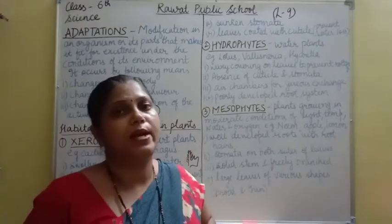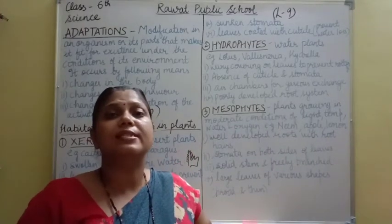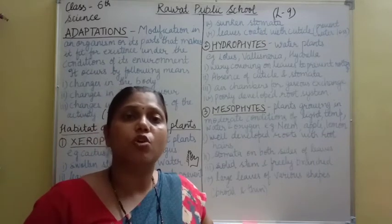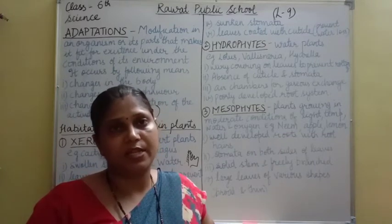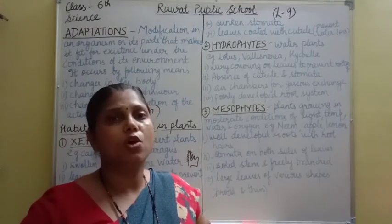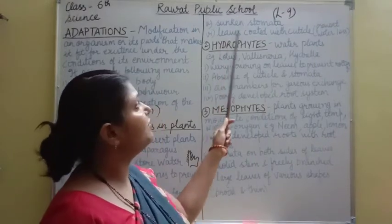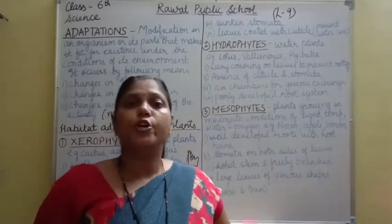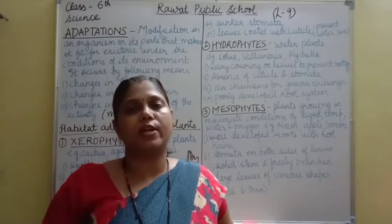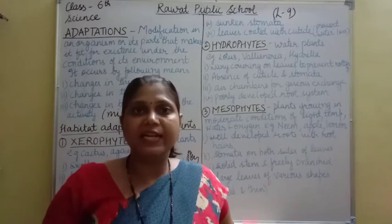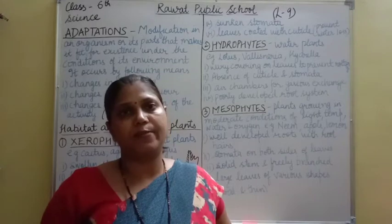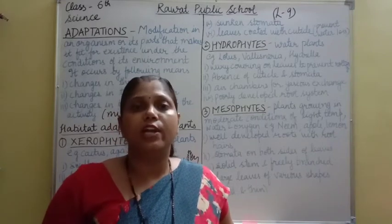Sunken stomata is another adaptation — the function is to reduce water loss from the stomata. Next, leaves coated with cuticles. A cuticle is a layer on the leaves which prevents water loss. In desert plants, these many modifications in xerophytic plants work together to minimize the loss of water.